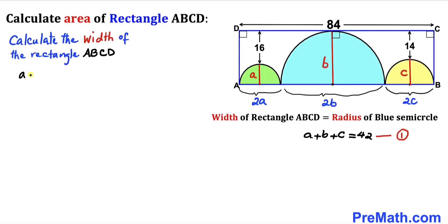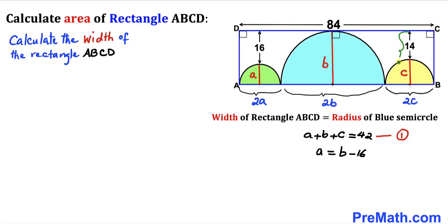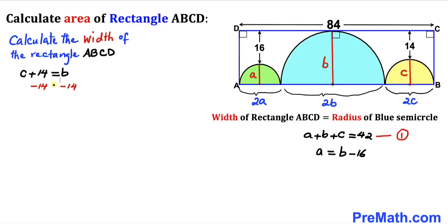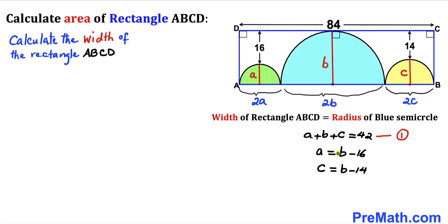So I can write a plus 16 equals b. Subtracting 16 from both sides gives us a equals b minus 16. Similarly, the vertical distance c plus 14 is equal to the radius b of the blue semicircle. So c plus 14 equals b, and subtracting 14 from both sides gives us c equals b minus 14.